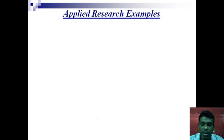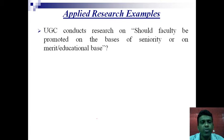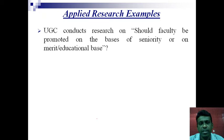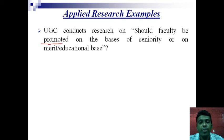Now let's look at some examples of applied research. Suppose the UGC — University Grants Commission — conducts research on whether faculty should be promoted on the basis of seniority, merit, or educational qualifications. That is an applied research, because they are going to use the findings of that research to address a specific problem: how faculty should be promoted.